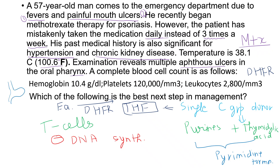Methotrexate causes death of all rapidly dividing cells, particularly those of the gastrointestinal mucosa — explaining the aphthous ulcers — and in the bone marrow there will be pancytopenia: RBCs, WBCs, and platelets all decreased. Folinic acid, also known as leucovorin, is the active form of tetrahydrofolate. It reverses toxicity because it does not require DHFR, so it is unaffected by methotrexate.